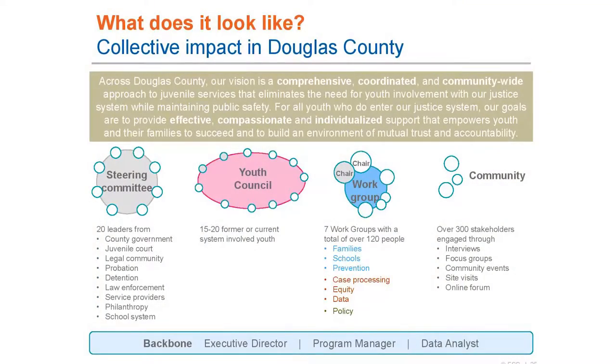What does a common vision look like? Across Douglas County, their vision was: 'A comprehensive, coordinated, and community-wide approach to juvenile justice and juvenile services that eliminates the need for youth involvement with our justice system while maintaining public safety.' This is a lot of text, but the key piece is that eliminating the need — not just reducing involvement, but eliminating the need for the system itself.